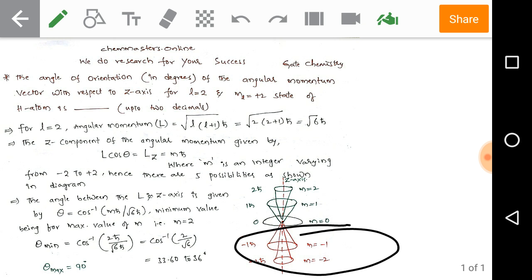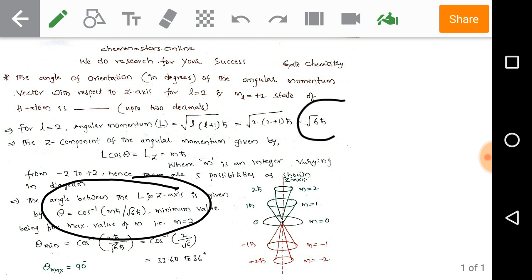At the same time in the negative values also, the angle between the aligned Z-axis is given by theta equals cos inverse of M h-bar divided by square root of 6 times h-bar. We have got the L value so we substituted L value, and we need to substitute M value in it, then we need to find the angle.